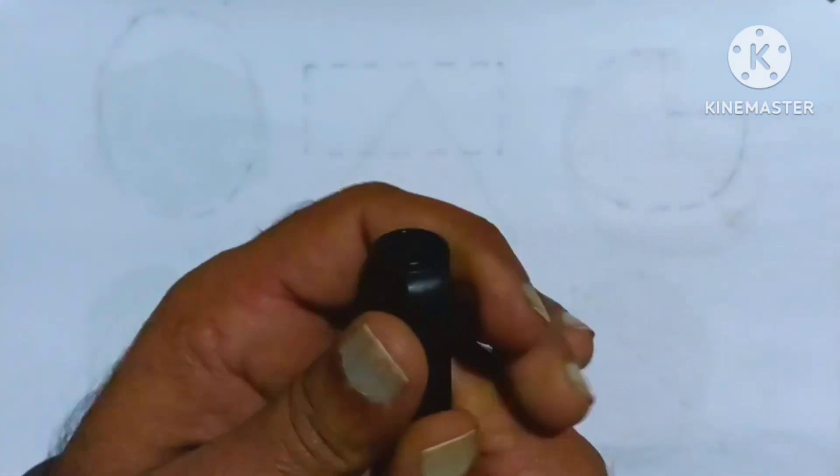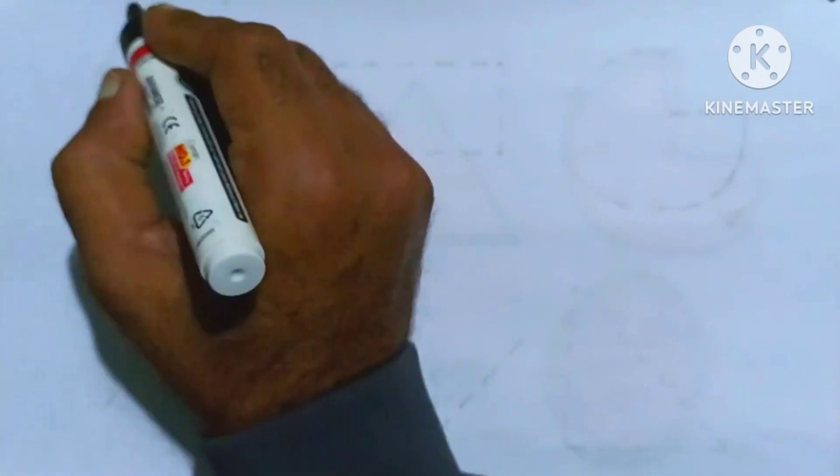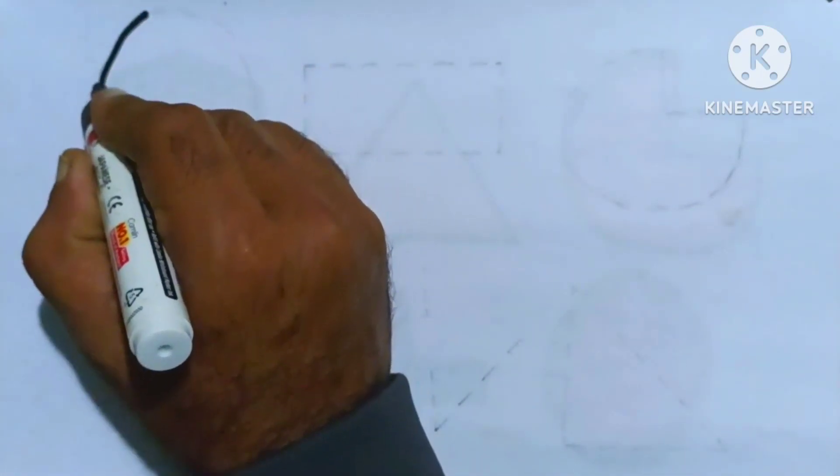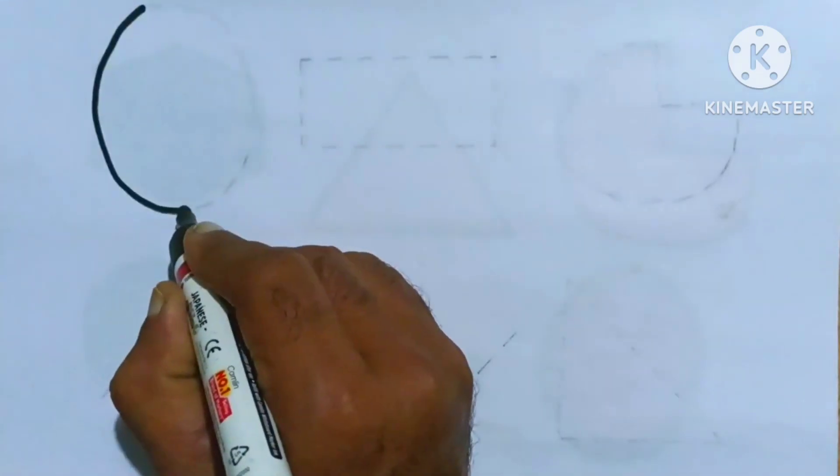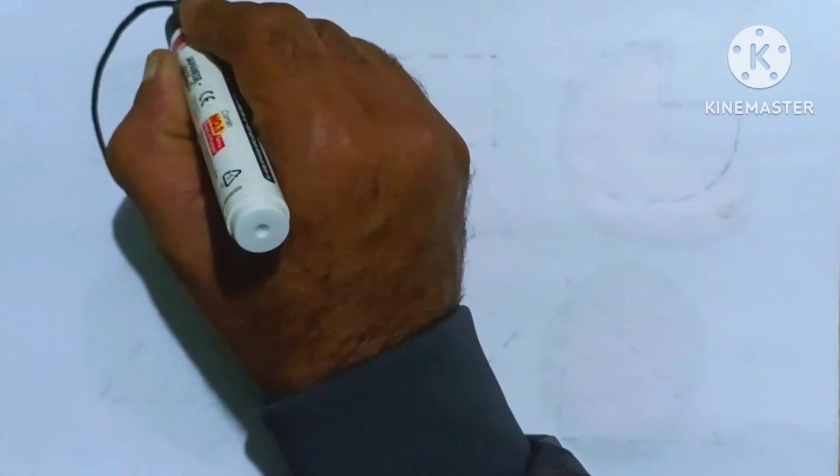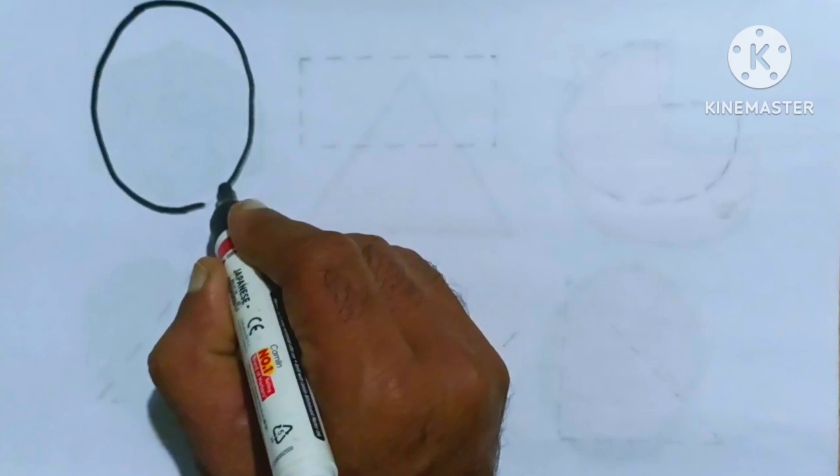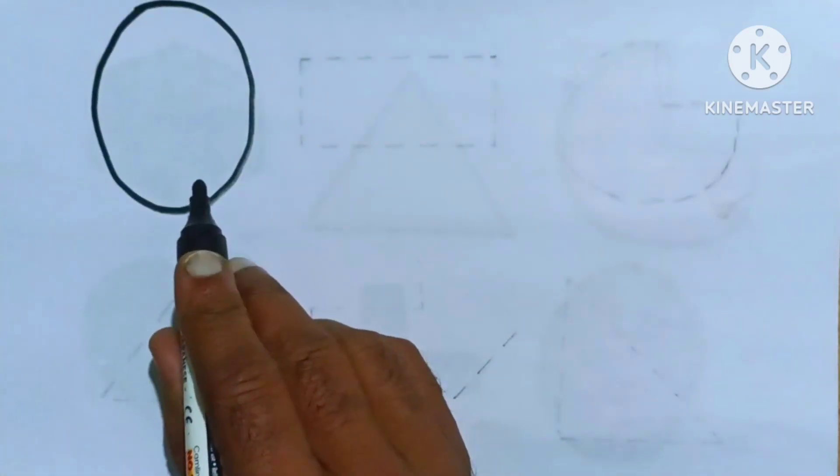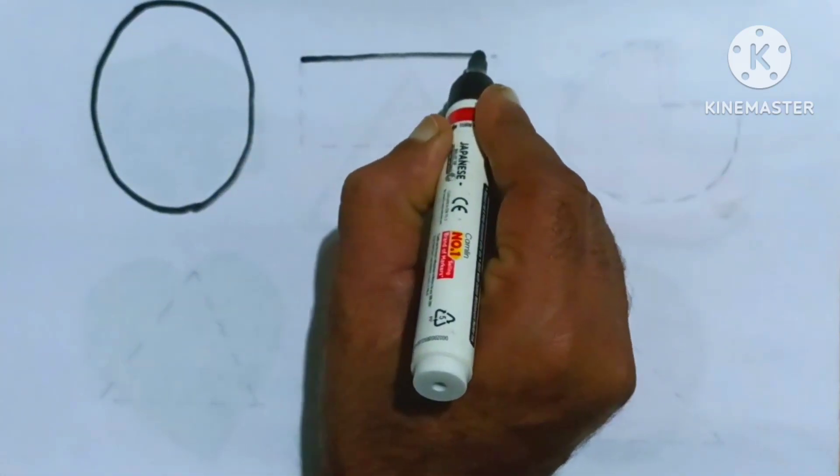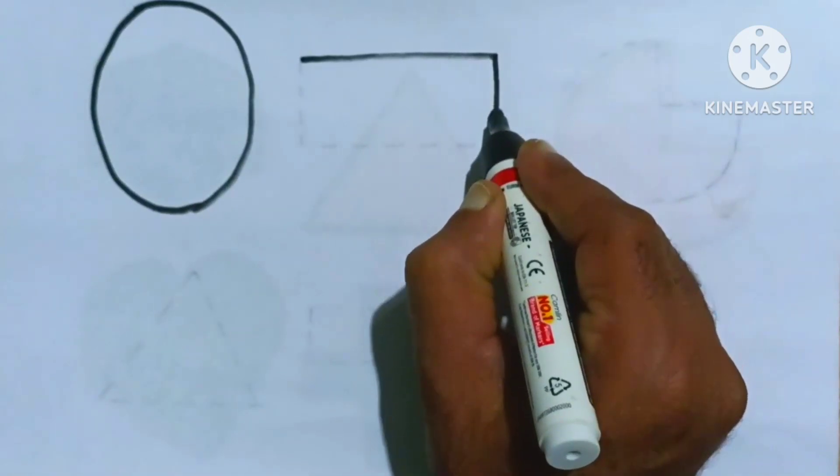Now we draw its shapes. First we draw oval, it's oval shape, oval, it's oval. Rectangle.